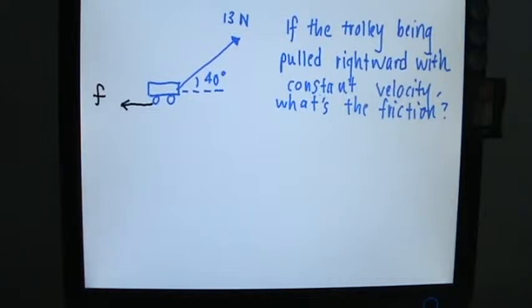In this question the keyword is constant velocity. When an object is moving with constant velocity, there is no acceleration. A equals to zero.